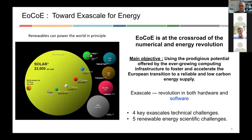We are currently at a transition in energy. Due to climate change we need to move fast towards energy that does not produce carbon dioxide. And on the other hand, in the computing world we are in a transition because the computer architectures that we have now cannot scale up — they would consume too much energy.